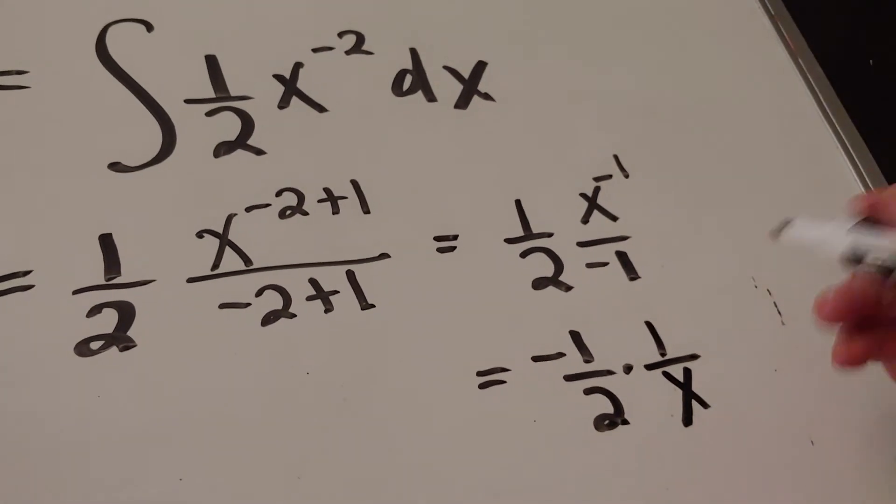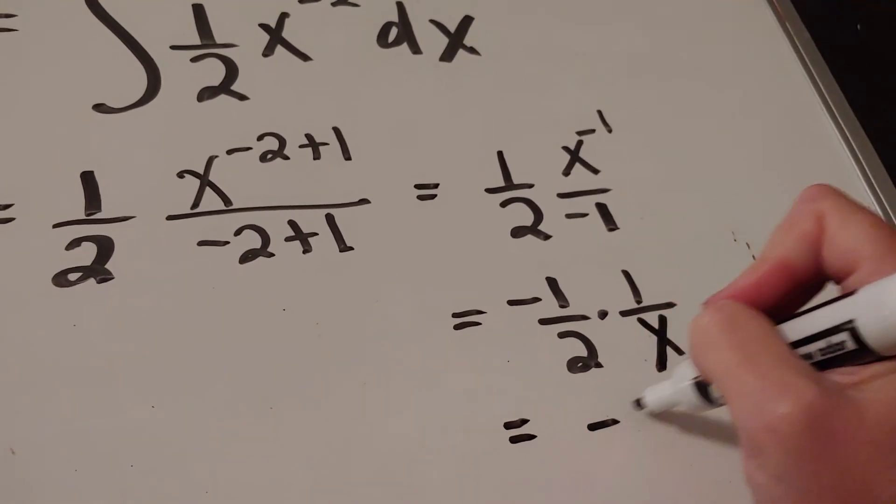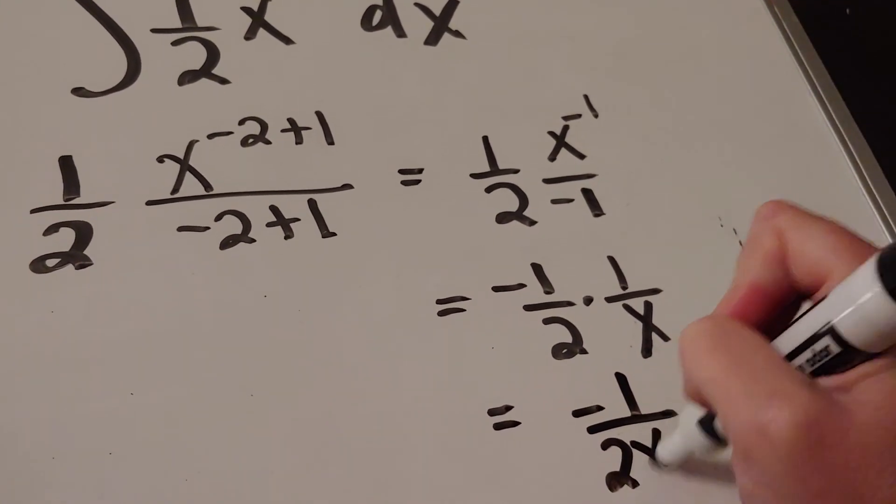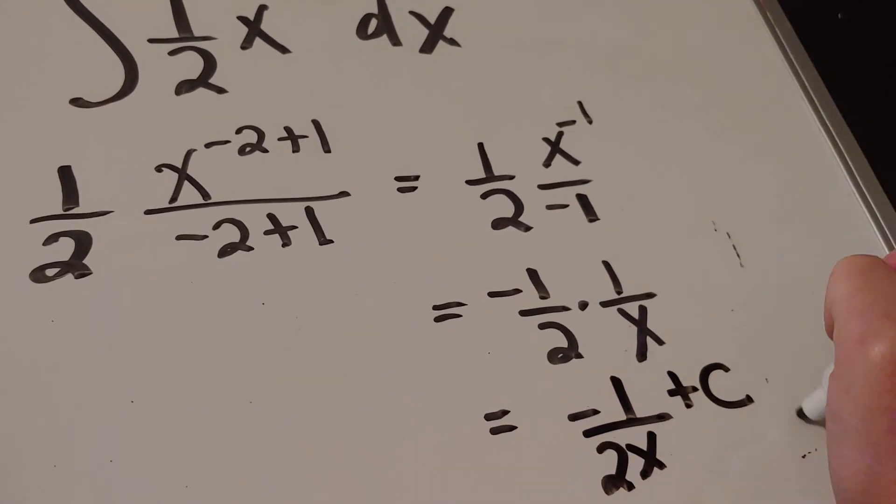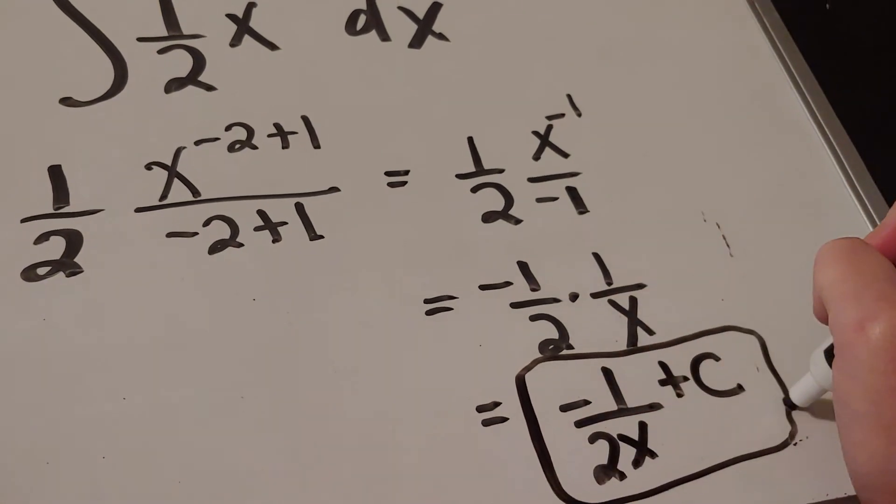If you want to squish these together, you totally could. We could call this negative 1 over 2x, and then, of course, plus c.